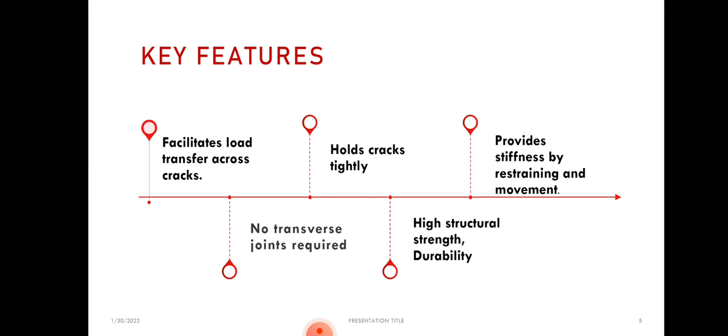The next slide is about the key features of CRCP. CRCP facilitates load transfer across cracks with the help of aggregate interlocking, holds cracks tightly, and provides stiffness by resisting movement. No transverse joint is required, and it delivers high tensile structural strength and durability.